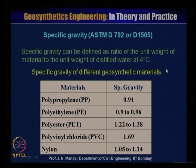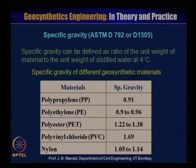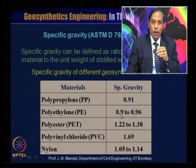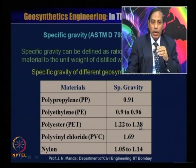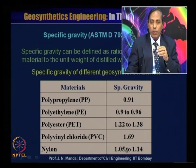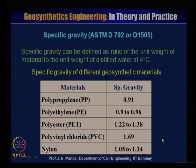Specific gravity per ASTM D792 or D1505 is defined as the ratio of unit weight of the material to the unit weight of distilled water at 4°C. Specific gravity values: polypropylene = 0.91, polyethylene = 0.92–0.96, polyester (PET) = 1.22–1.38, polyvinyl chloride (PVC) = 1.69, nylon = 1.05–1.14. Different materials have their own specific gravity values.